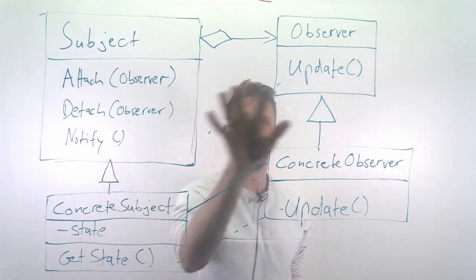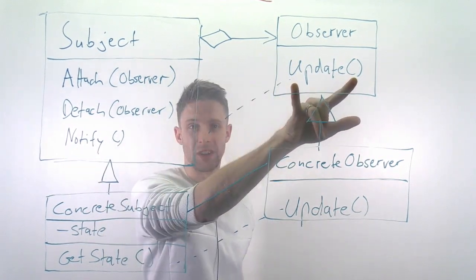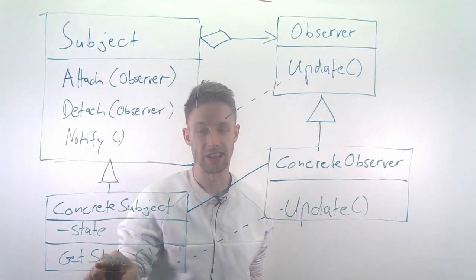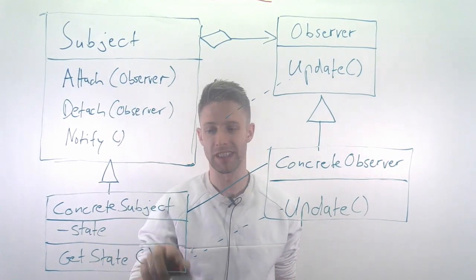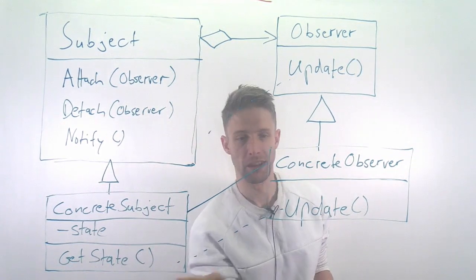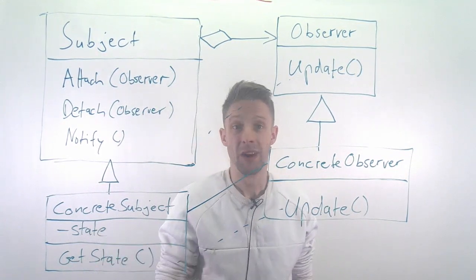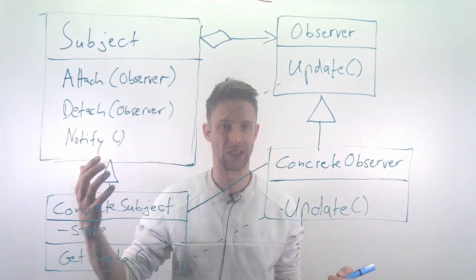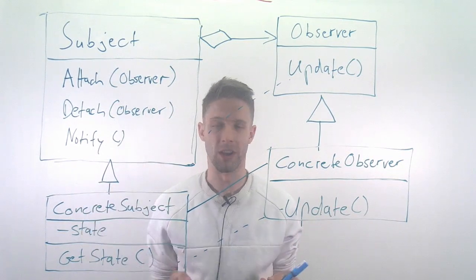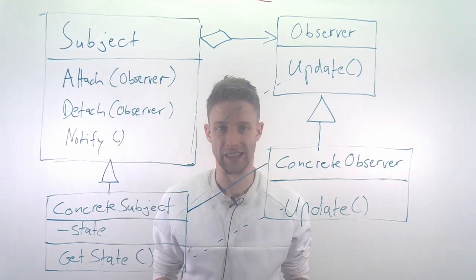Once we call the notify, the update method is called of our bar chart. The bar chart knows exactly how the data looks like, so it calls the get state method and the get state method returns the state, which is the concrete data structure with the polling information, and then the observer updates the display.